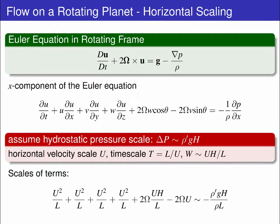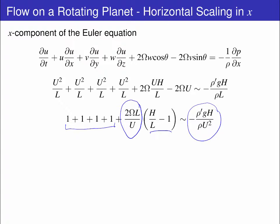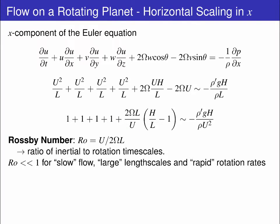Substituting for these scales gives a group of U squared on L terms, and two terms with the rotation scale, and then the scaled pressure term on the right. Bringing together these dynamical and scaled equations for the x component of the rotating Euler equation, we can non-dimensionalize by dividing through by U squared on L, returning a bunch of order one terms, a factor incorporating rotation outside of H on L minus one, and then this non-dimensionalized hydrostatic pressure term. The first thing to remember is that H on L is small, so this bracket is order one.